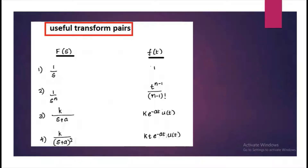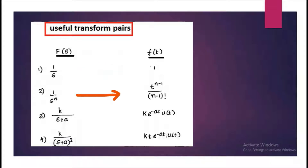These are the most useful transform pairs. If you have 1 by S, then in the T domain it will be equal to 1. Similarly, if you have 1 by S raised to N, it would become T raised to N minus 1, divided by N minus 1 factorial.